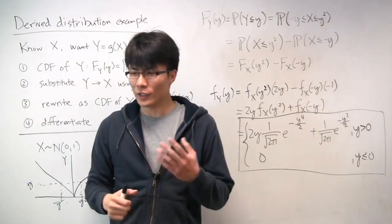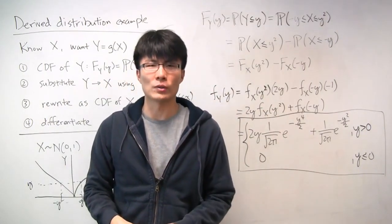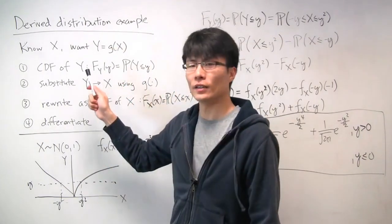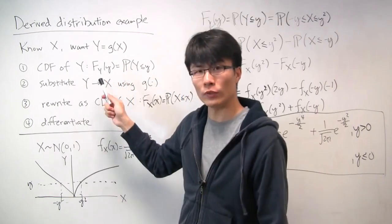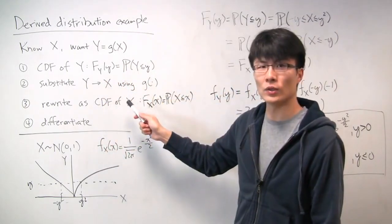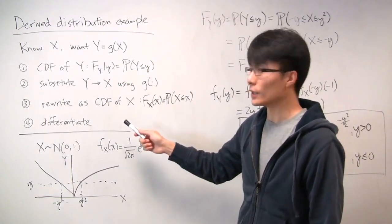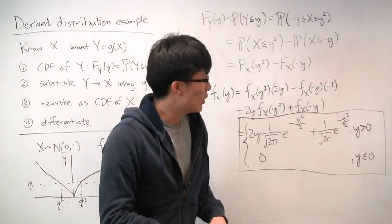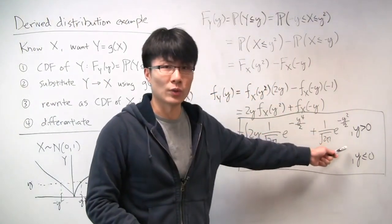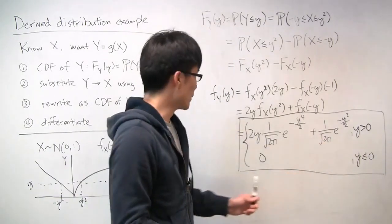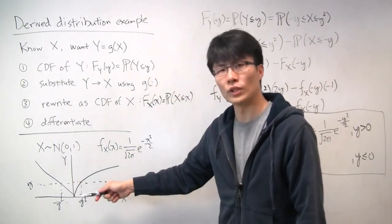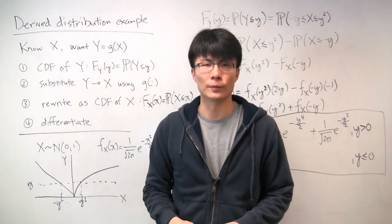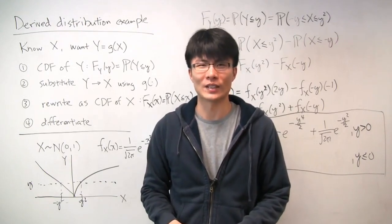Derived distribution problems can seem difficult at first, but if you remember these straightforward steps and go through them methodically, you can come up with the solution for any of these problems. One last thing to remember: always think about the ranges where things are valid, because the relationship between two random variables can be complicated and you need to be aware of when things are non-zero and when they're zero. I hope that was helpful — see you next time.